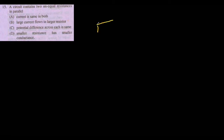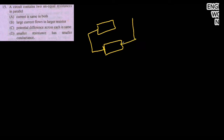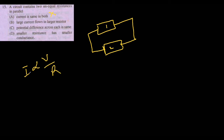A circuit contains two unequal resistances in parallel — R1 and R2. In a parallel circuit, voltage is the same across both but current is not the same. A smaller current flows through the larger resistance because current has an inverse relation with resistance. Smaller resistance has larger conductance because conductance is the inverse of resistance, so option C is the correct answer.